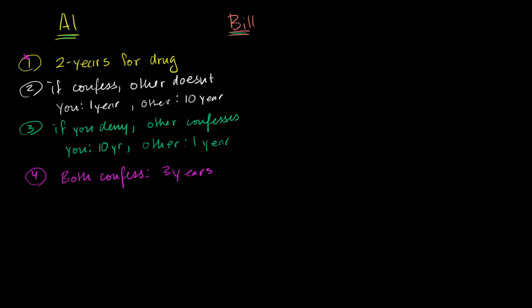And to understand that, I'm going to draw something called a payoff matrix. So let me do it right here for Bill. So Bill has two options. He can confess to the armed robbery. Or he can deny that he knows anything about the armed robbery. And Al has the same two options. Al can confess. And Al can deny. And since it's called a payoff matrix, let me draw some grids here.